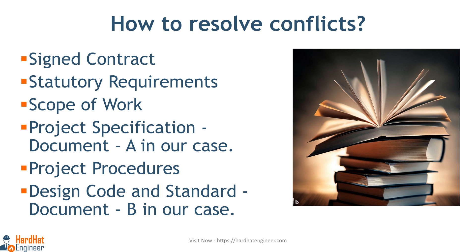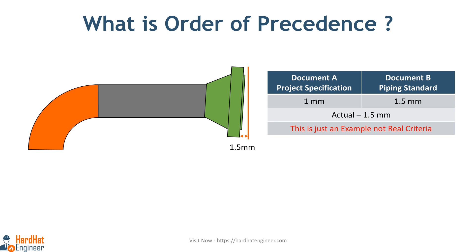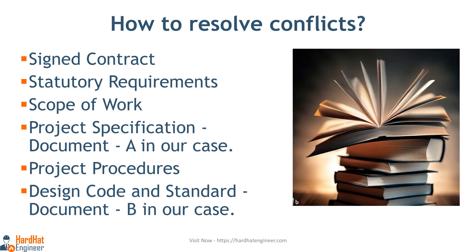You have to follow the order of the documents to identify the acceptance criteria. In our example, Document A is above Document B in the list, which means the requirements mentioned in Document A shall be followed. This is how conflicts are resolved when there are different acceptance criteria for the same things.